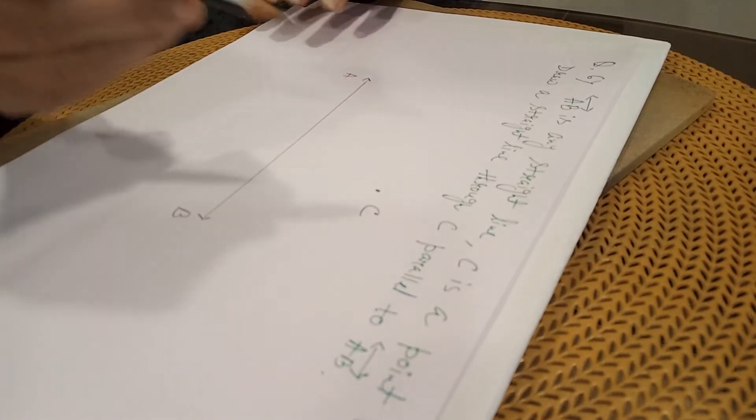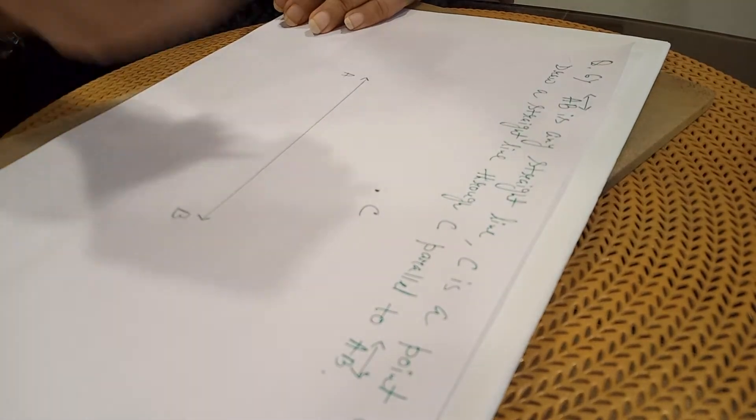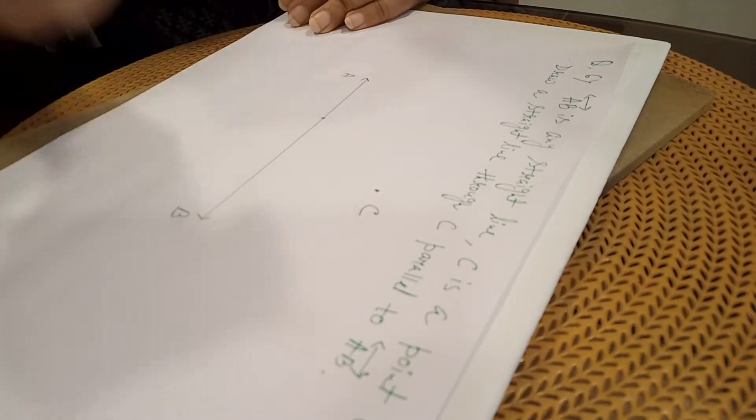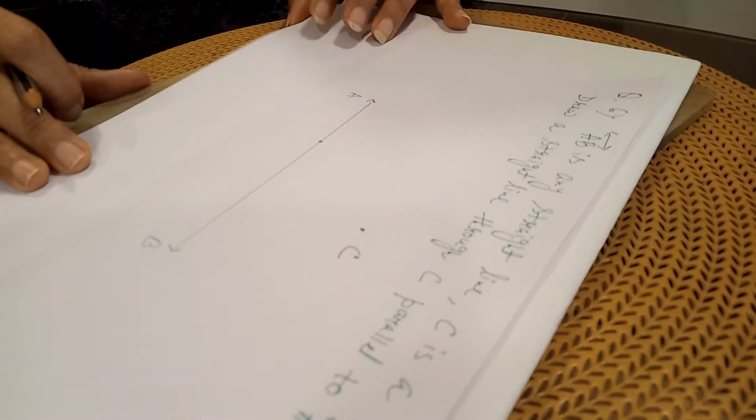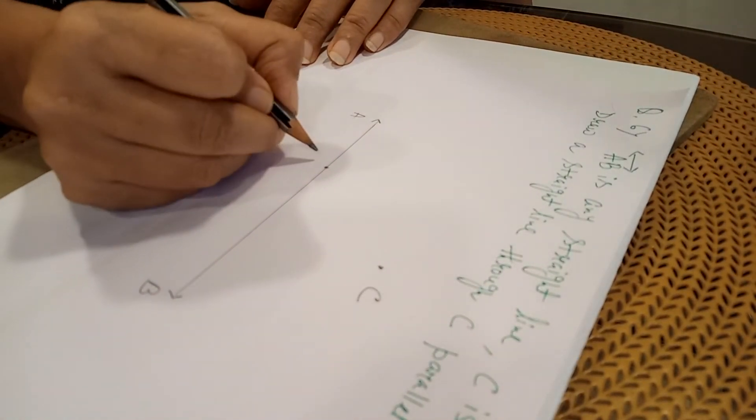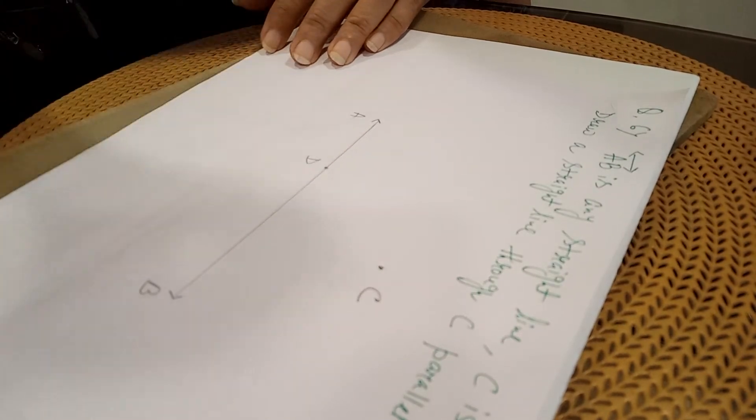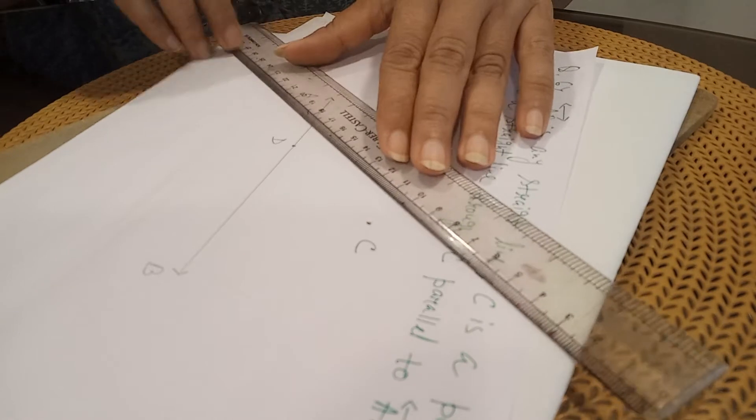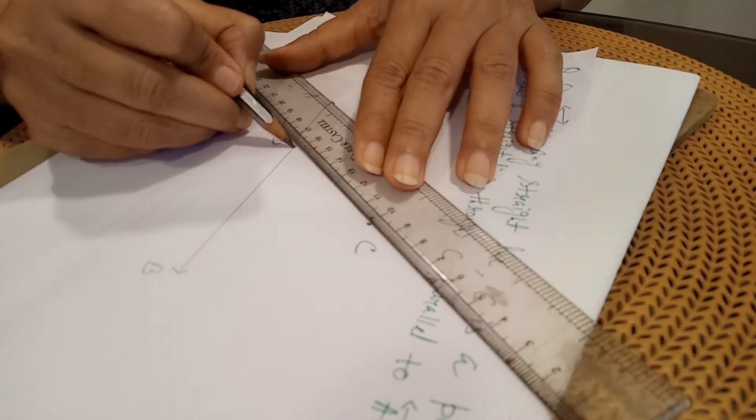Now, as C is there, I am taking another point on AB. I am naming it D. Then, I will join C and D.